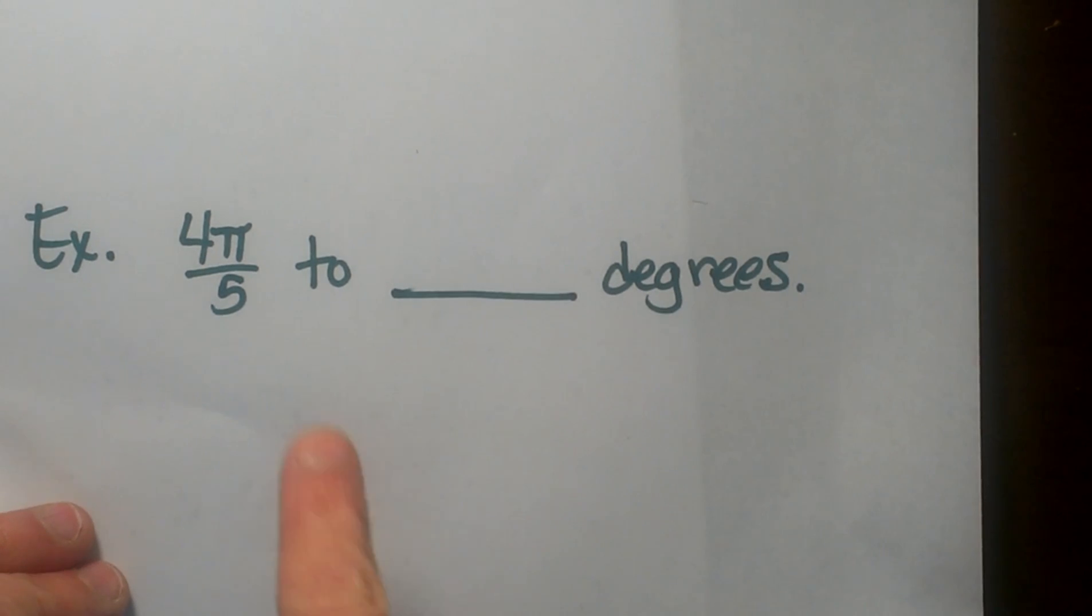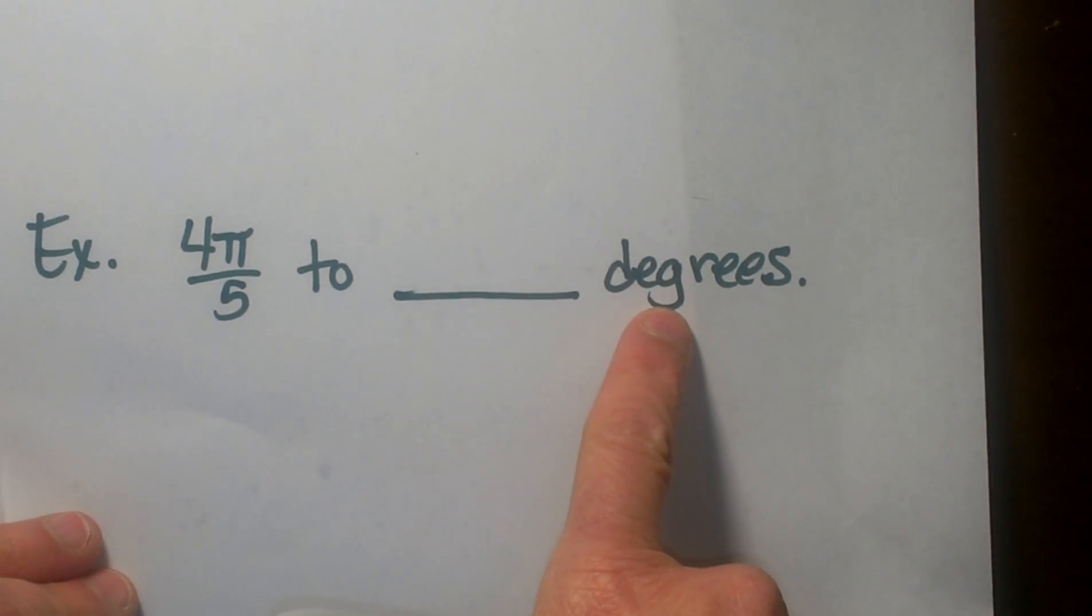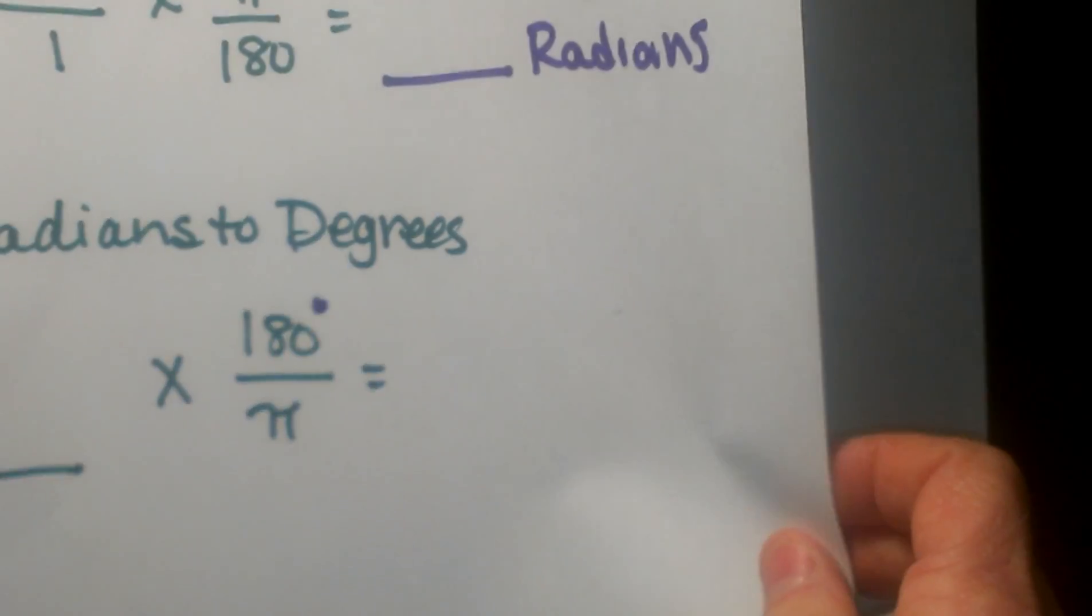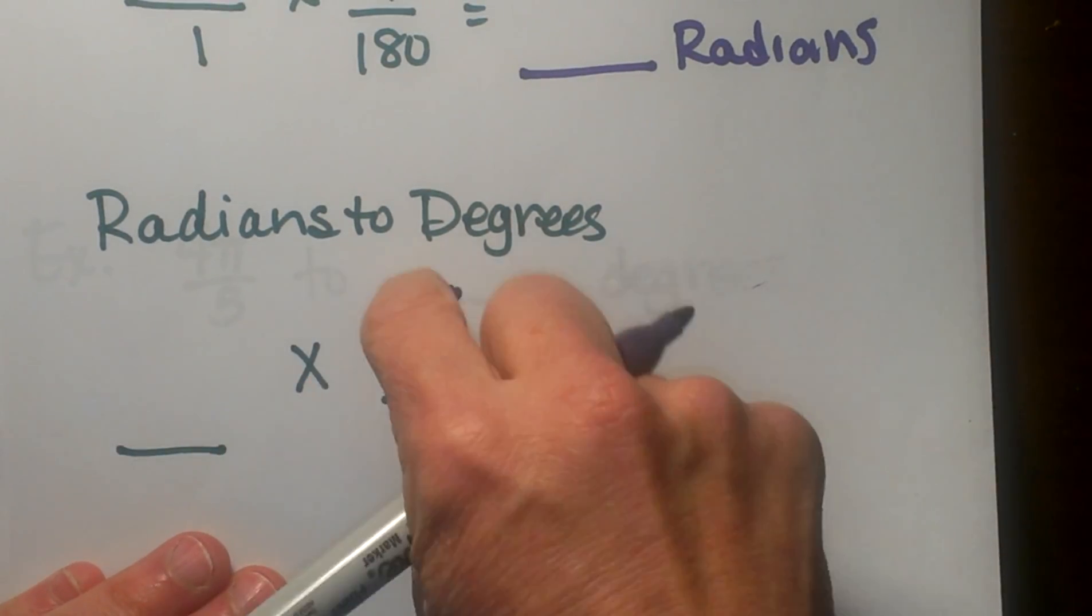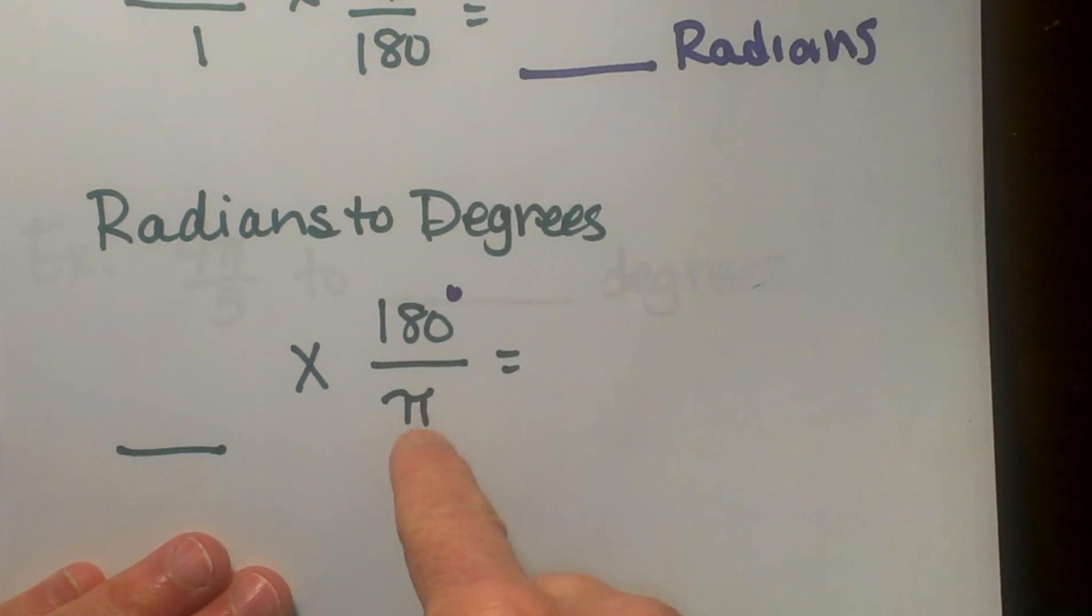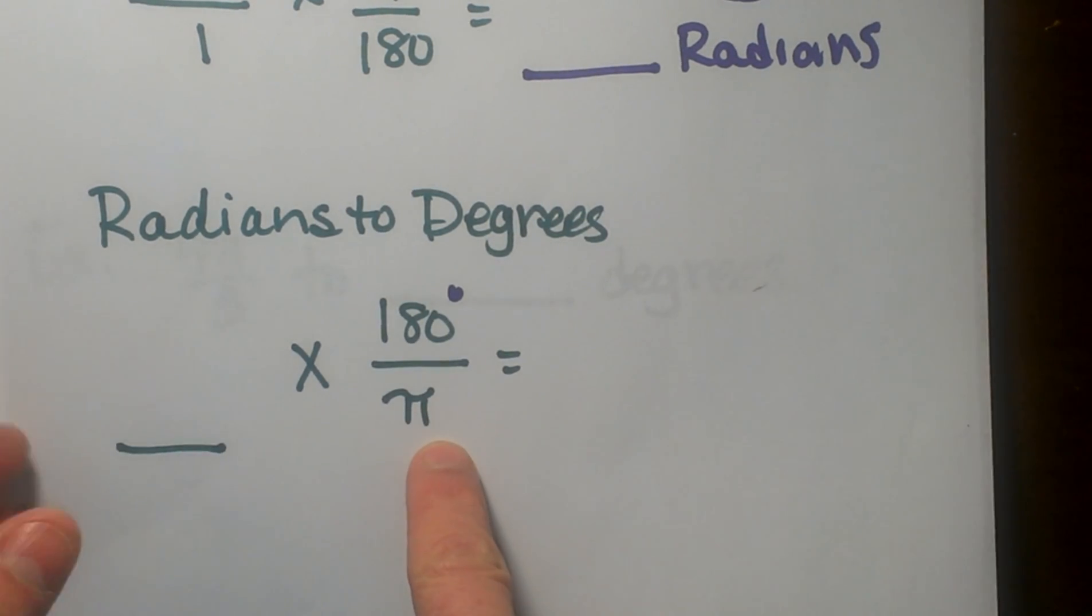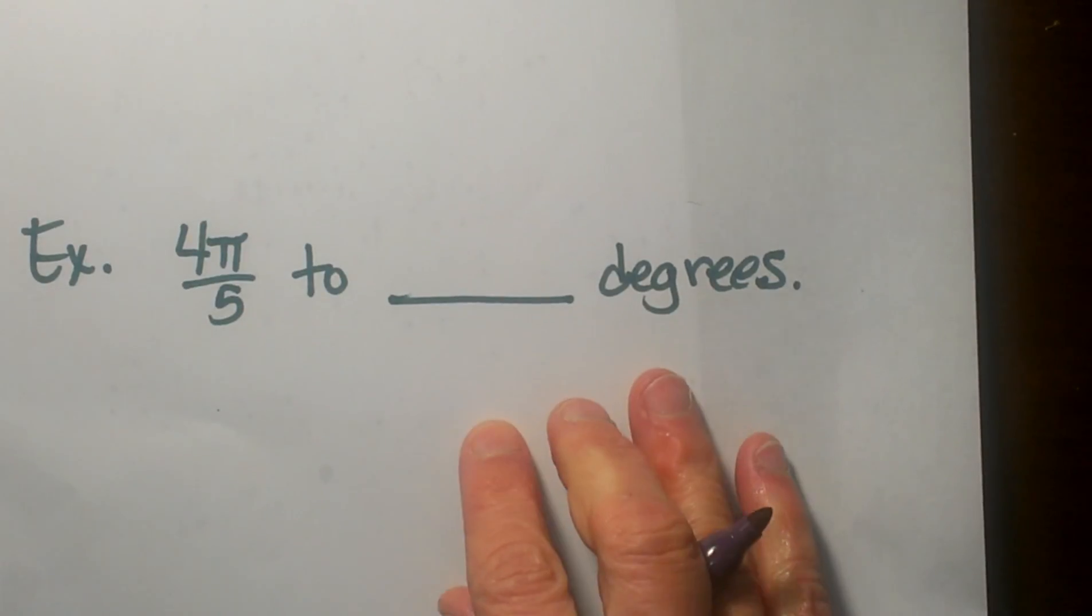Now let's go from radians back to degrees. Let's pull back our little formula. We put our radians here and we multiply it this time by 180 over π because I'm trying to get rid of my π. So let's write this out.